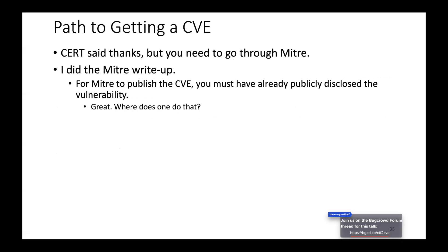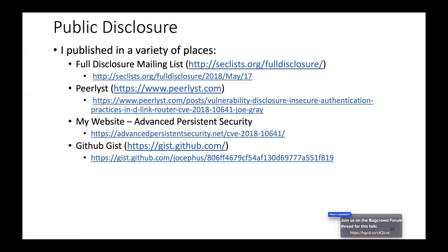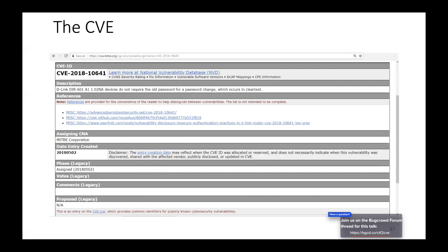I did the MITRE write-up, but the thing is with MITRE — to get an actual CVE you have to publish it somewhere else first, and I wasn't aware of where to do that. I found the full disclosure mailing list, I did a Perl list post, posted it on my website, and on GitHub. Just to make sure no one could say I did not disclose it publicly. The only thing I really missed was Twitter.